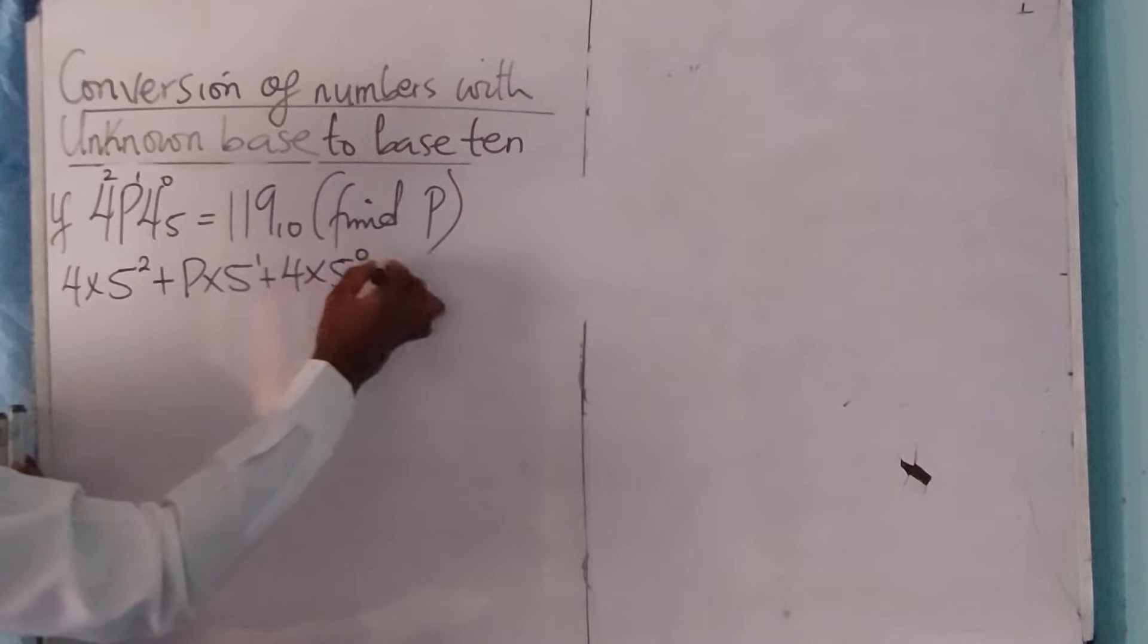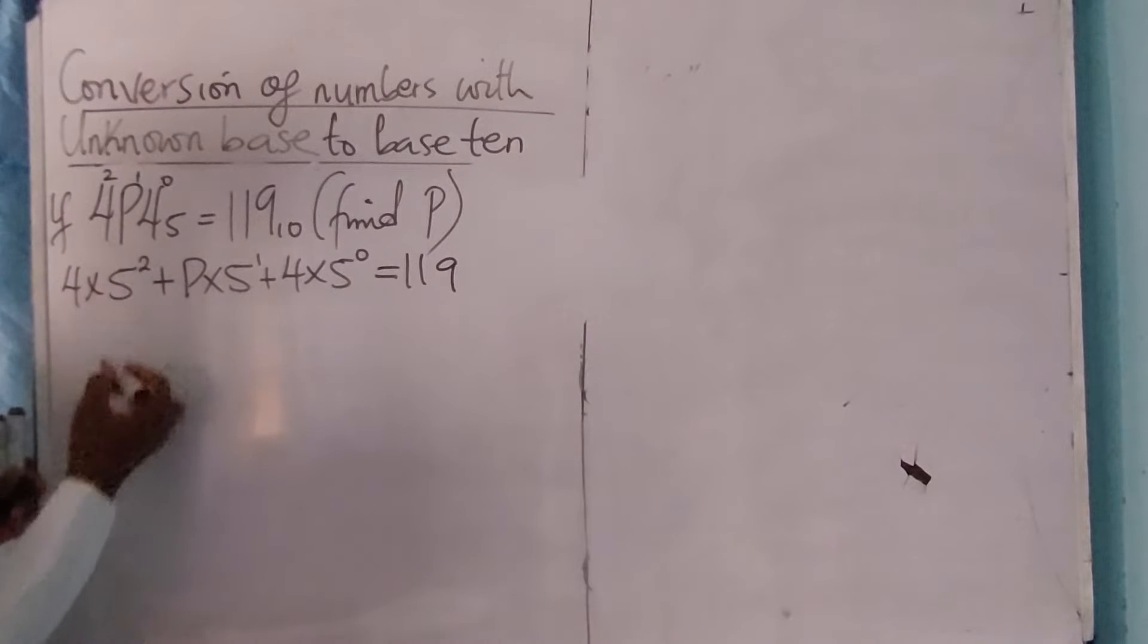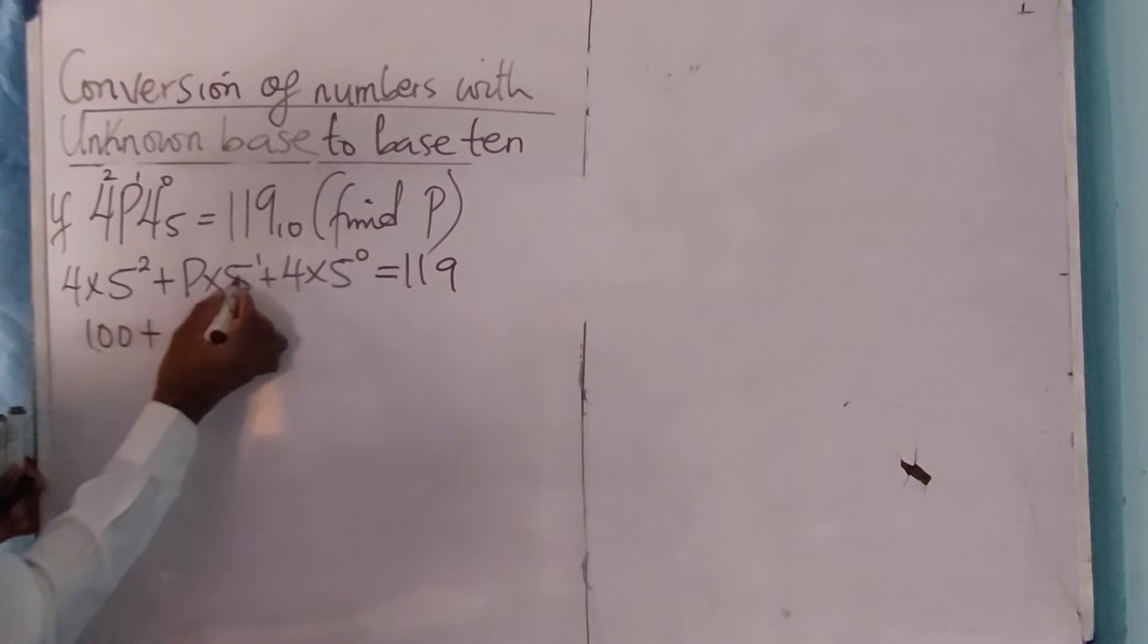So 5 times 5 is 25. 4 times 25, that is 100. Now 5 raised to power 1 is 5, so 5 times P is 5P.